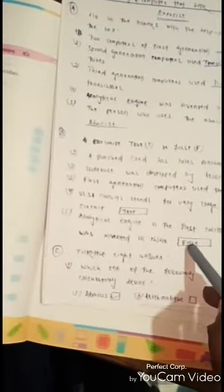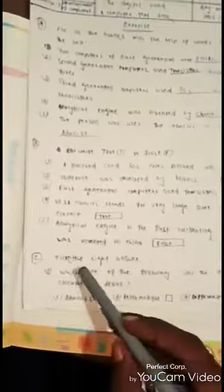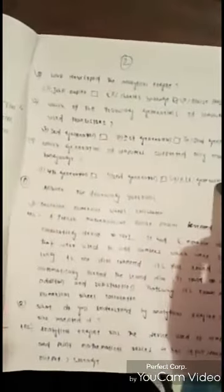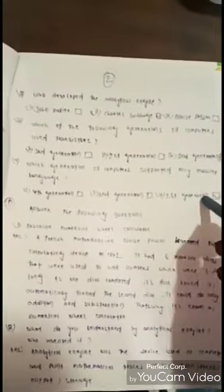Tick the right answer. Which of the following was the first calculating device? You know ABACUS is the first calculating device. And then who developed the analytical engine? Charles Babbage was invented the analytical engine. Which of the following generation of computers used transistors? The second generation computers used transistors instead of vacuum tubes. Which generation of computers supported only machine language? First generation computers supported only machine language.